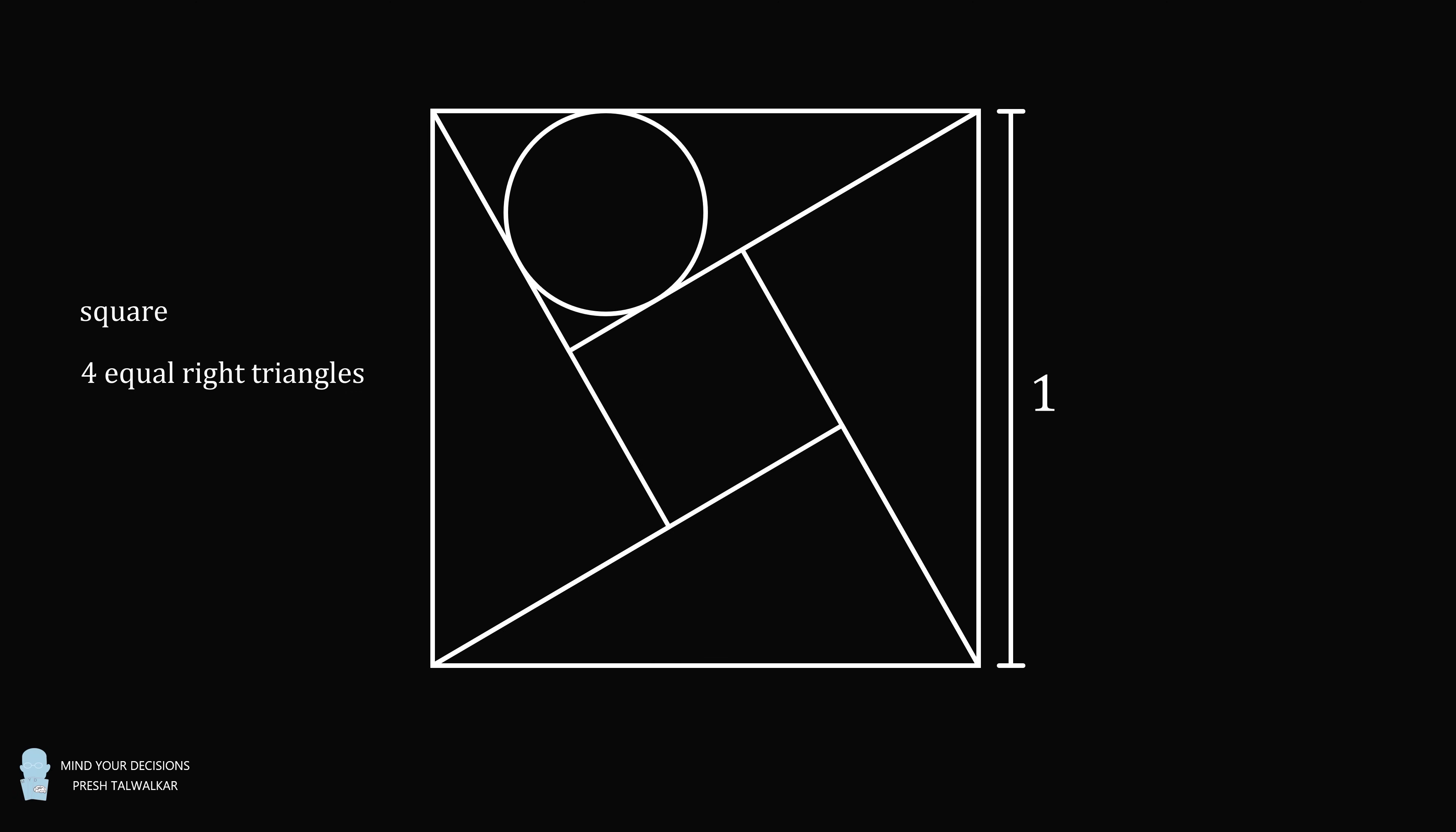Inside of each triangle, inscribe a circle. Also inscribe a circle in the square in the center. Now, if these five circles are equal to each other, what is the radius of each circle equal to?